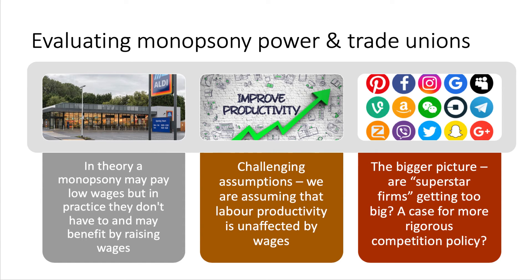The first evaluation point is 'in theory but in practice.' In theory a monopsony may pay lower wages, but in practice many firms with significant local buying power don't necessarily pay that low monopsony wage. A good example is the deep-discount supermarkets Lidl and Aldi. Aldi has increased their minimum pay above the recommended living wage of £9 per hour outside London, paying £10.55 per hour in London — above the going rate for supermarket workers, even though they have some monopsony power as a fast-growing major employer.